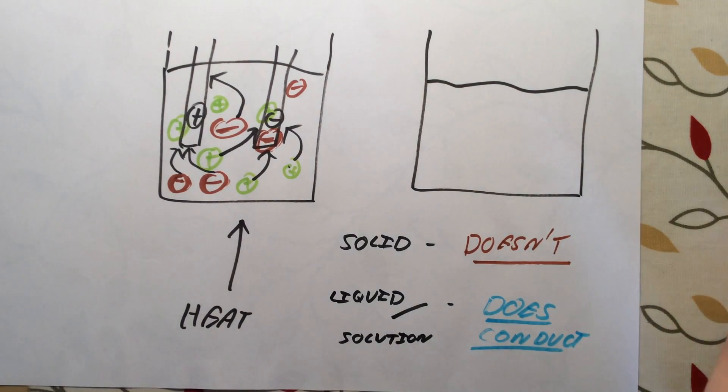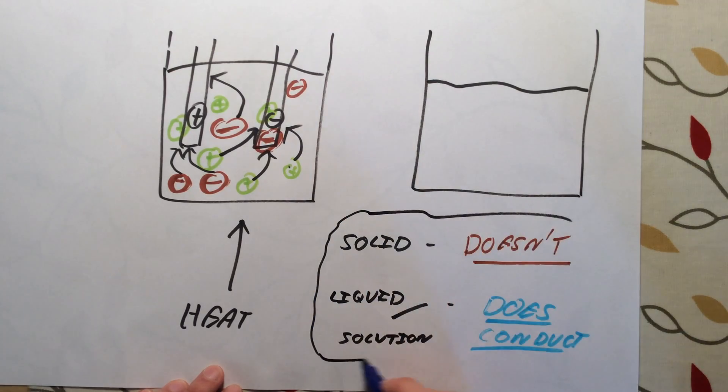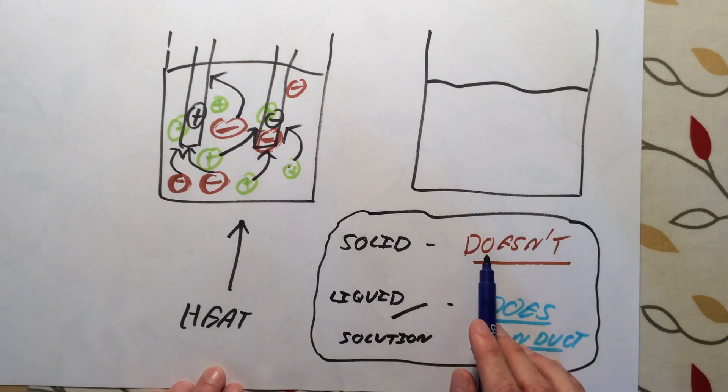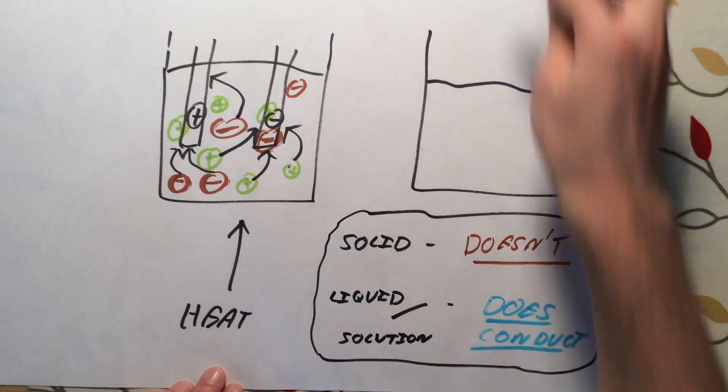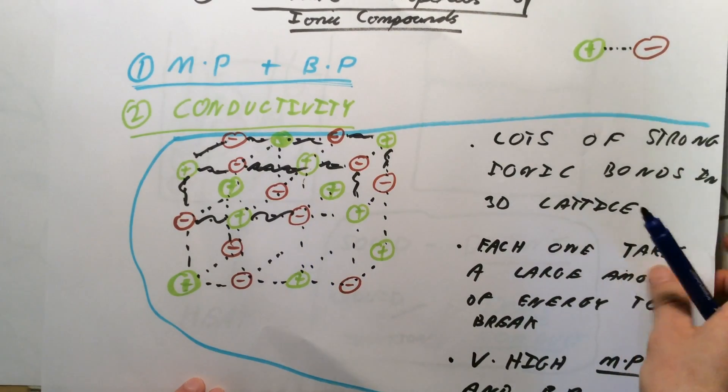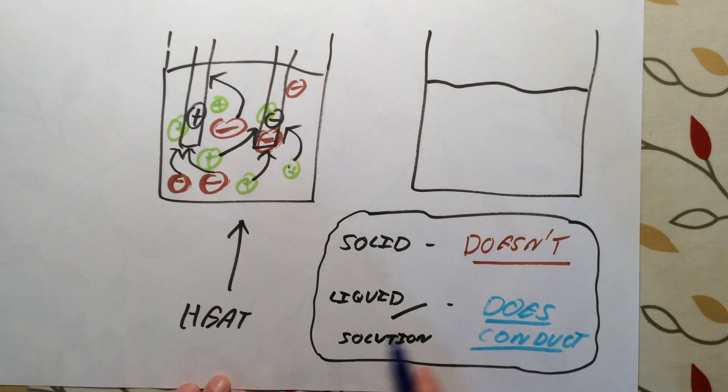You need to remember that ionic compounds have high melting and boiling points because there are lots of strong electrostatic forces in the lattice structure that must be overcome. You need to remember that a solid ionic compound does not conduct electricity because the ions are fixed by strong electrostatic forces. However, when you overcome those forces, either by melting the salt or by dissolving it, it then does conduct electricity.